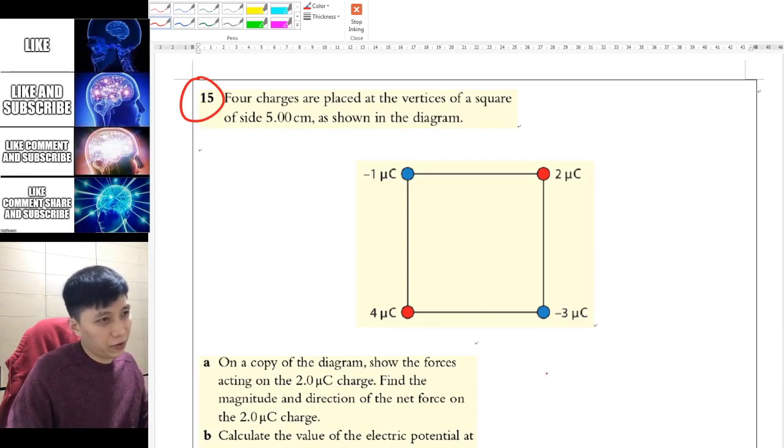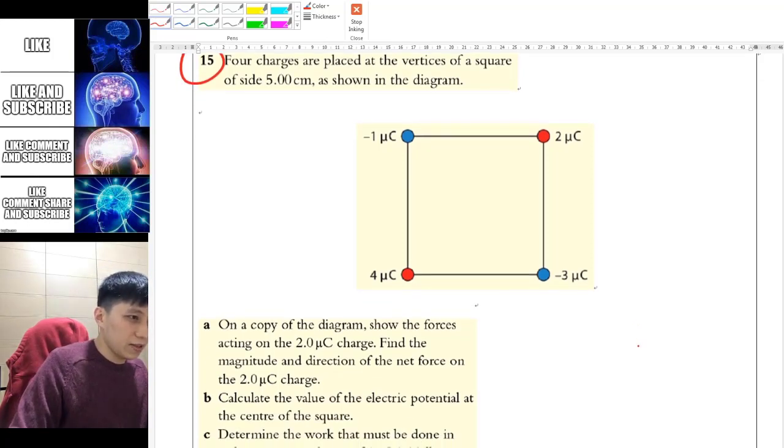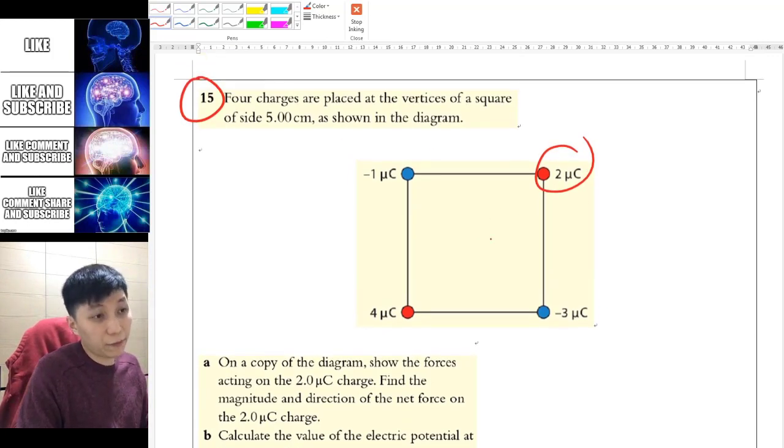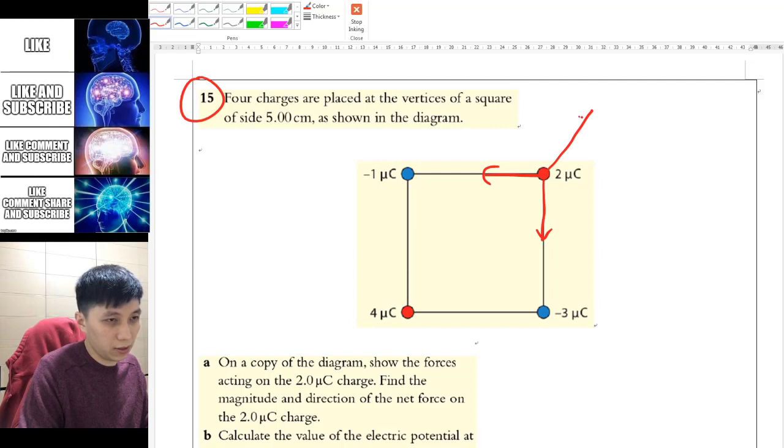Question 15 looks tedious because the four vertices have random numbers with no symmetry. Part a asks to find the magnitude and direction of the net force on this charge. There will be three forces due to the other three charges—this one is attractive, this one is also attractive toward the negative charge, and the 4 microcoulomb is repulsive.